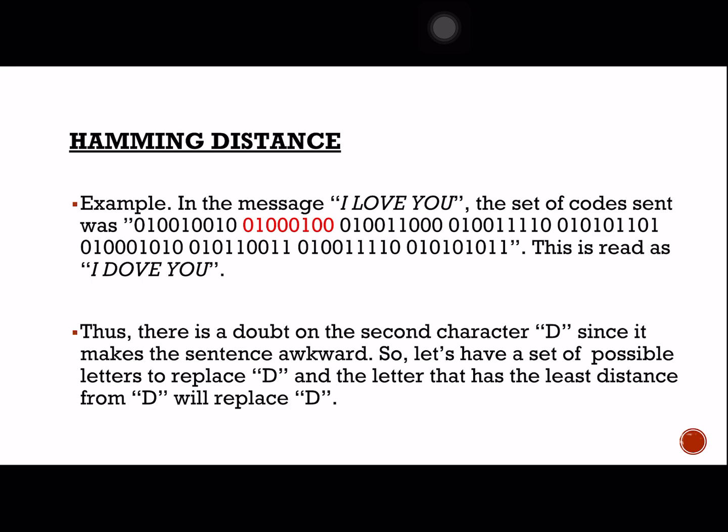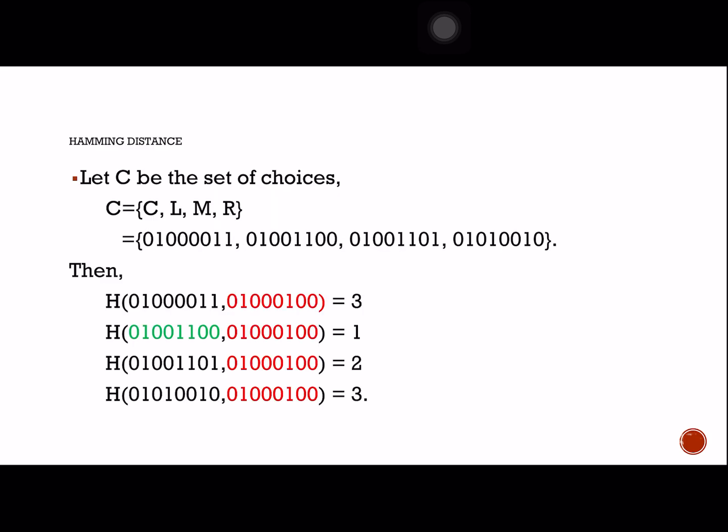To apply Hamming distance, you simply list the possible correct letters. Let C be the set of choices — instead of letter D, the correct letter could be C (giving 'I cove you'), L ('I love you'), M ('I move you'), or R ('I rove you'). So we have three possible letters to replace letter D.